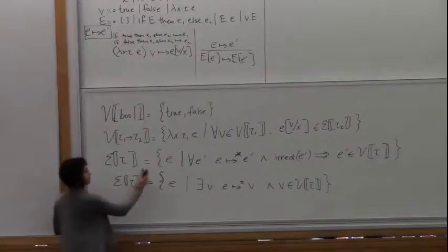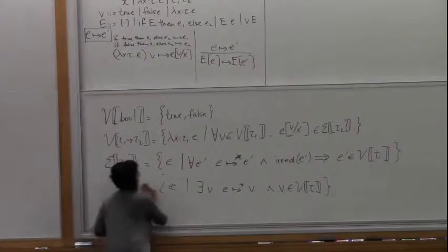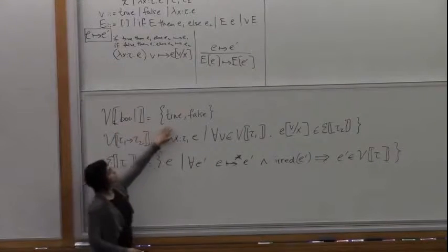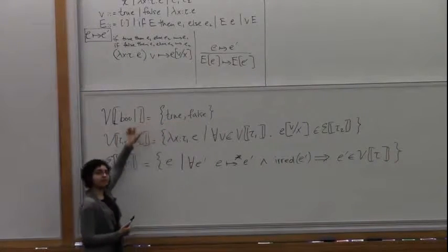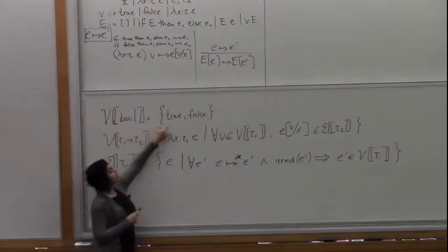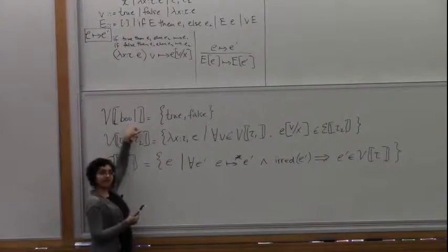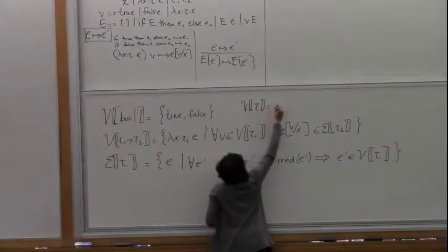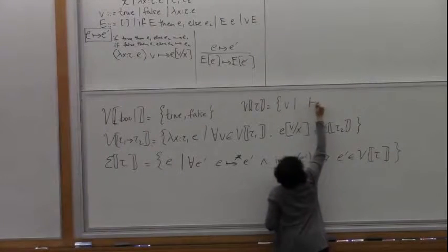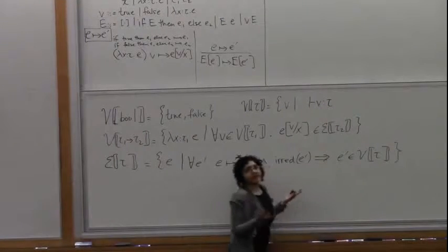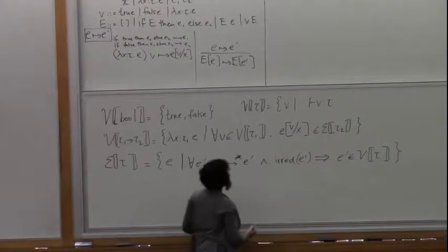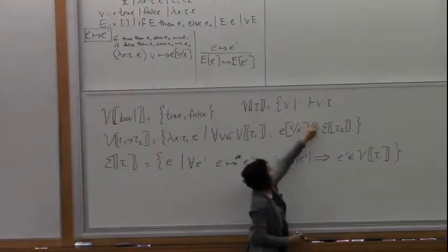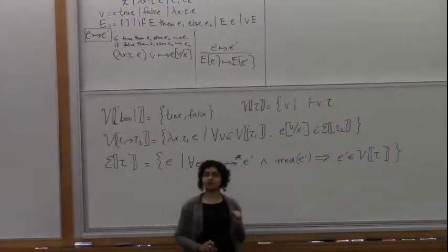We're building these value interpretations of types out of values — syntactically, closed values. Whenever I write V[tau] it contains certain closed values of type tau, and whenever I write E[tau] I want to put in a closed expression of type tau.